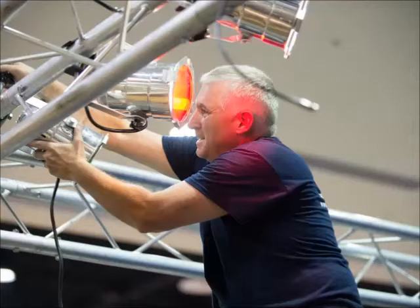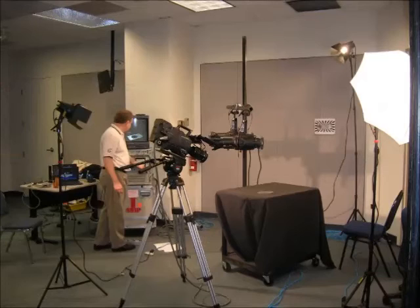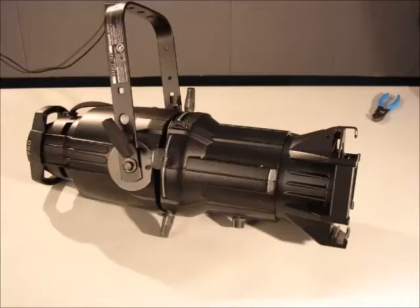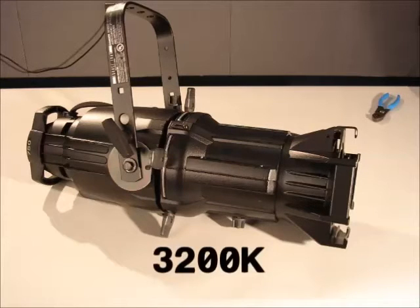When lighting for video, use lamps with the correct color temperature. For indoor shoots, the lamps should be rated at 3200 degrees on the Kelvin scale.